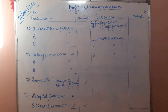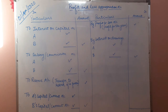The second entry on the credit side is 'By Interest on Drawing.' Interest on drawing is charged on the drawings partners have made during the year, calculated on the basis of different formulas which we will discuss later. Assuming two partners A and B, their individual interest on drawing figures are written separately with the total written outside.